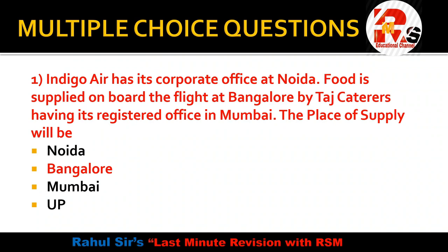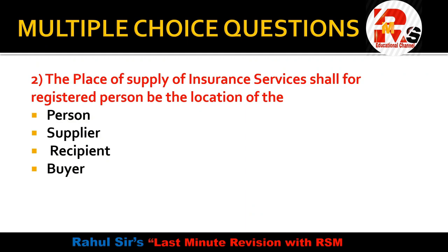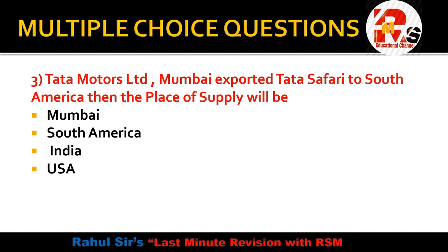The point is very simple — just remember the basics. All rules are given under Section 10 as per the Place of Supply rules. Second question: the place of supply of insurance services shall, for a registered person, be the location of — place of the person, place of supplier, place of recipient, or place of buyer? The answer is place of the recipient.